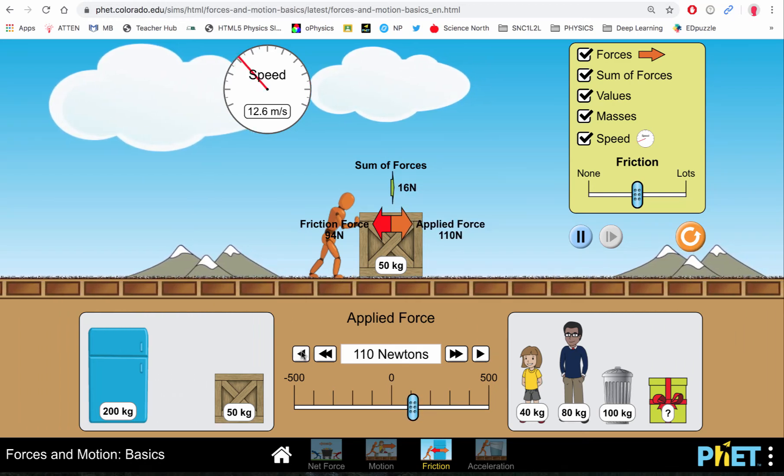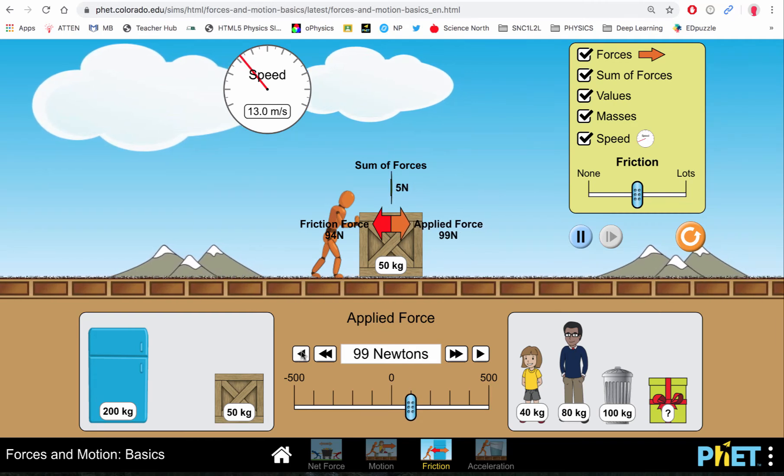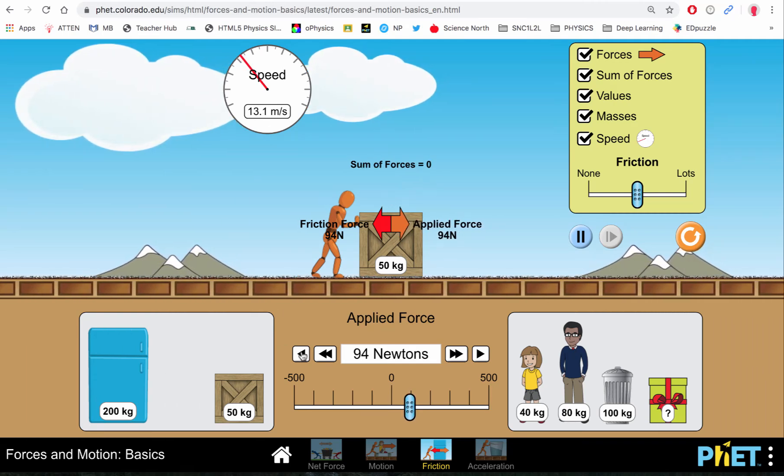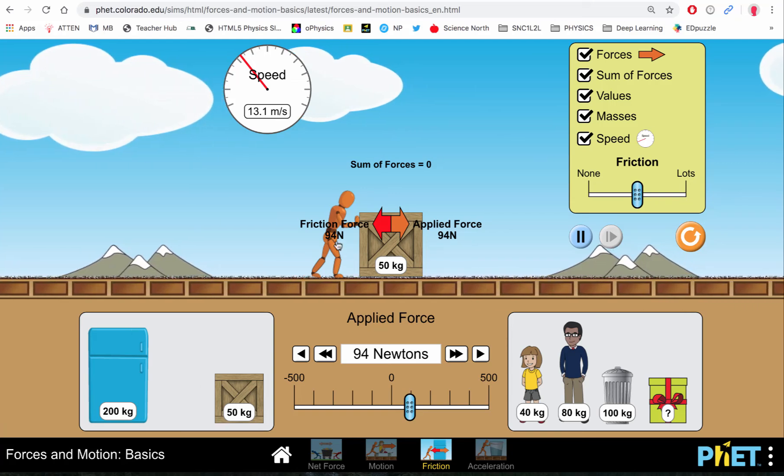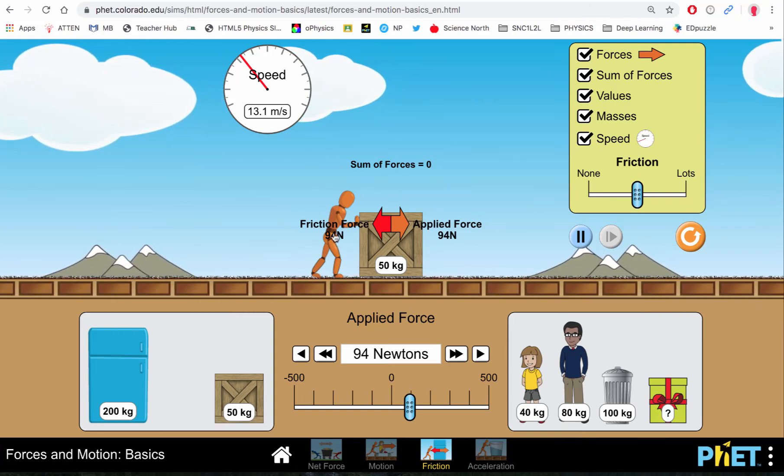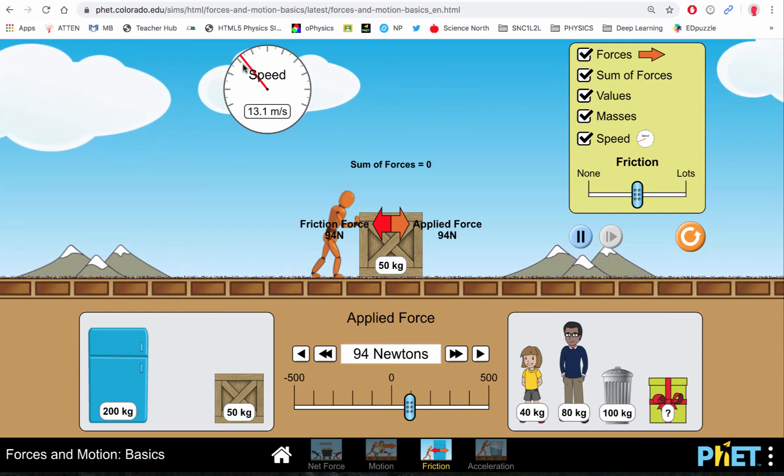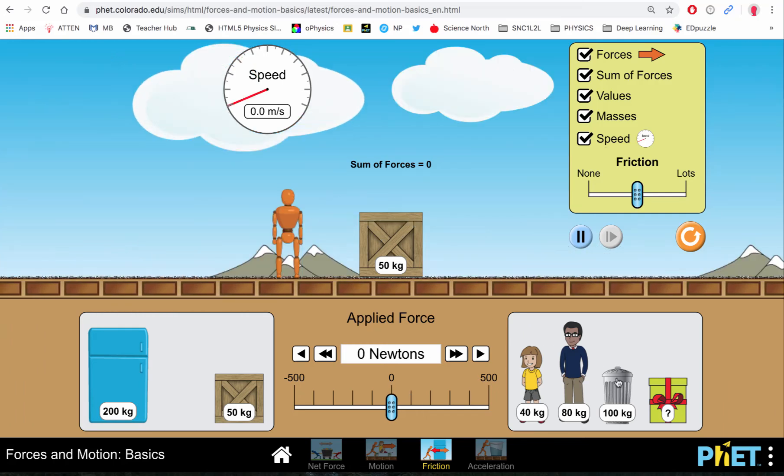I'm just going to decrease my applied force until I hit 94, and when you do that, your applied force and your frictional force are equal to each other, which means there is no more acceleration, or you're moving at a constant speed.